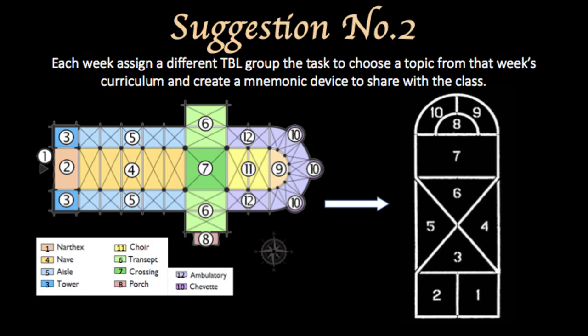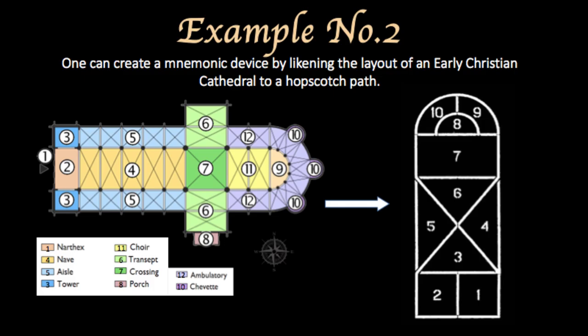Suggestion number two: have students work in TBL groups to develop mnemonic devices. Assign each group to one week of the term, and those students will be responsible for developing a mnemonic device for something presented in that week's curriculum. Art history is full of potential for mnemonic devices, but because the curriculum is already heavily image-based, it may take some additional creativity. For example, one can create a mnemonic device by likening the layout of an early Christian cathedral to a hopscotch path. The path, a common image from childhood, is adjustable so it can accommodate different layouts, and it also includes numbers to which cathedral elements can be assigned. Students must actively think about the content when developing their mnemonic device, and later that mnemonic can make recall more efficient.